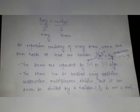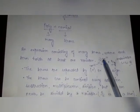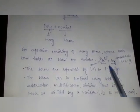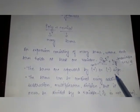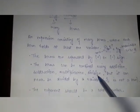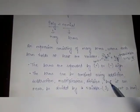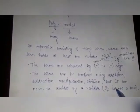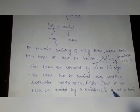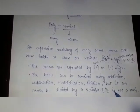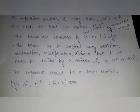Now let's look at the features of polynomials. First, the terms are separated by plus or minus signs, as we can see in the examples. We can also combine terms using addition, subtraction, or multiplication. However, you cannot have a variable in the denominator — for example, 2 upon x or 2 upon x² would have the variable in the denominator, so those are not polynomials.